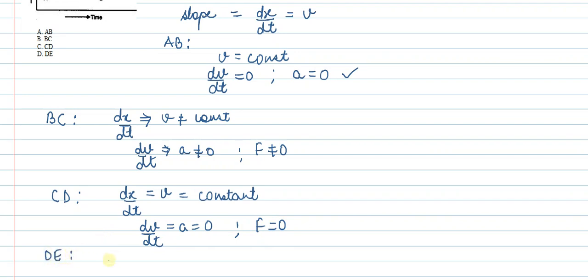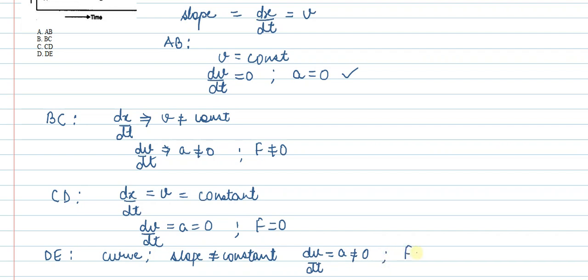The last region is DE. You can see that DE is a curve, not a straight line. So its slope will not be constant — the slope keeps changing. Therefore, dv/dt, which equals acceleration, will not be zero, meaning the force in this case will also not be zero.